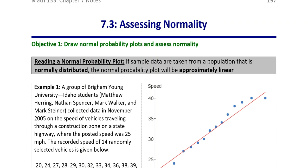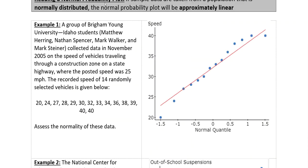So let's look at this first example here. A group of students gathered data on the speeds of vehicles through a construction zone, and you can see that those points are approximately following that line down that diagonal. So therefore, since the points are approximately linear, that means that the dataset is coming from a population that is normally distributed, at least as far as we can tell.